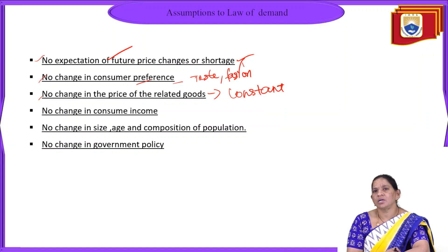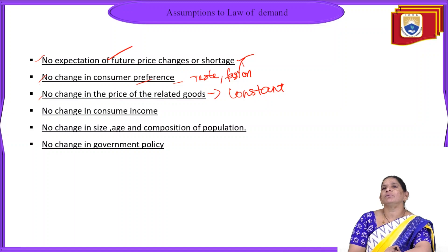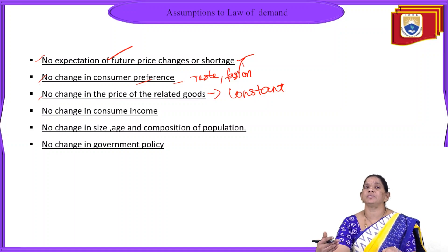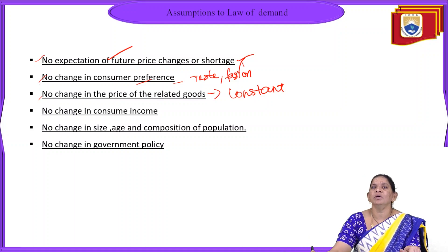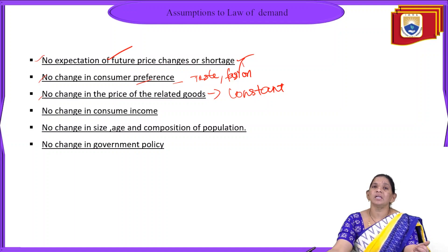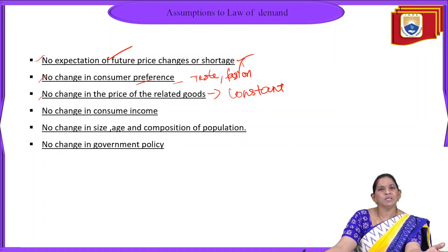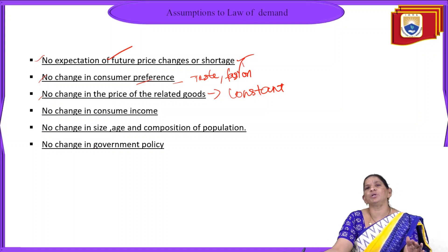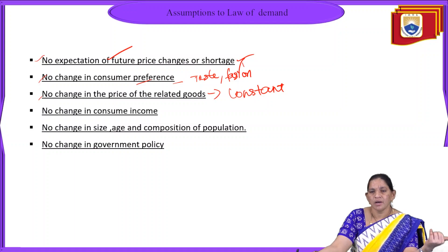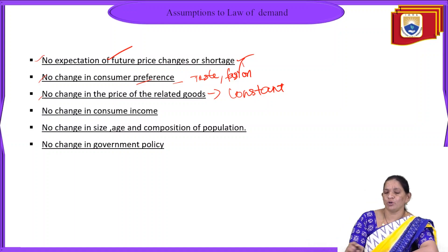Next is no change in consumer income. The income of the consumer must not change. When middle-class people with higher income move to upper class, they don't want to purchase the same goods anymore — they want superior goods. For example, a consumer purchasing rice at 40-42 rupees with an income of 20,000-25,000 will, when earning 50,000-60,000, shift to a superior quality at 50-55 rupees. When consumer income shifts, the present law of demand will not work.